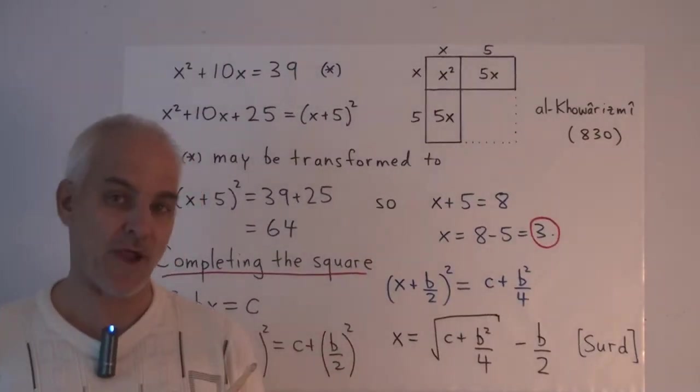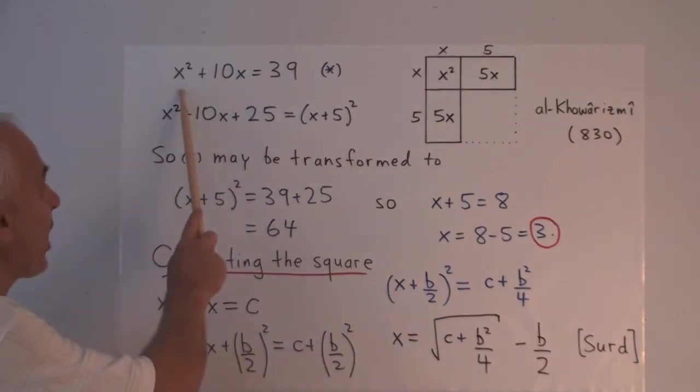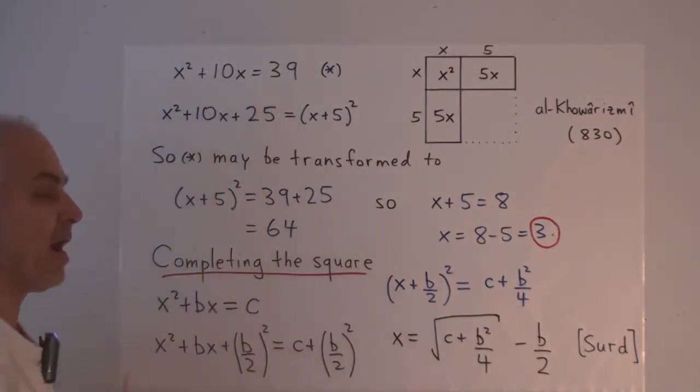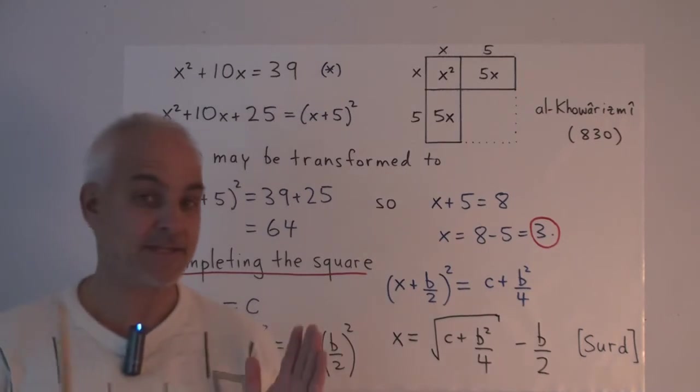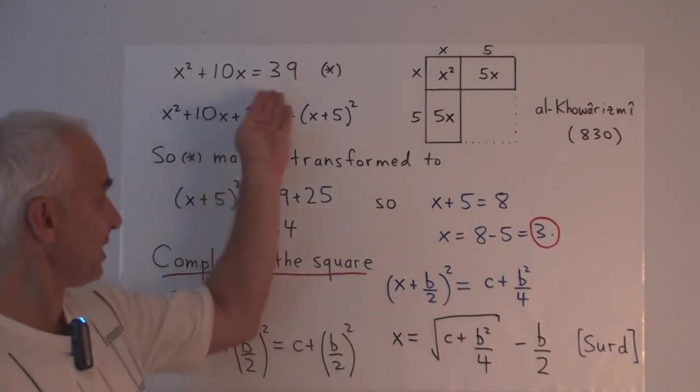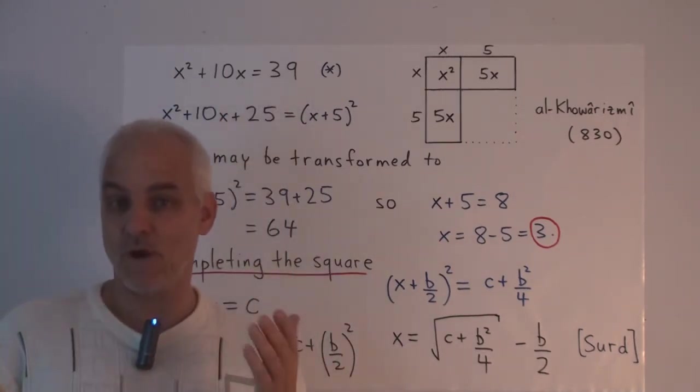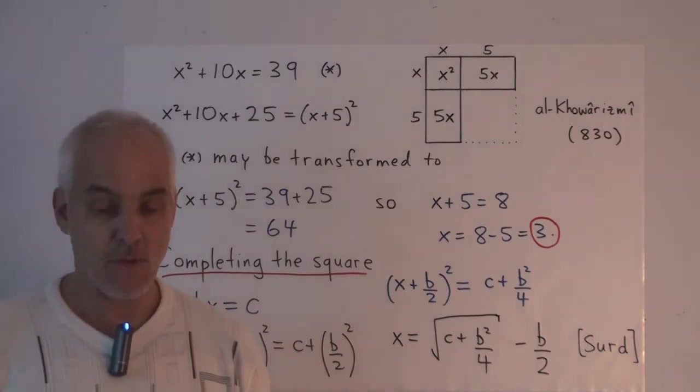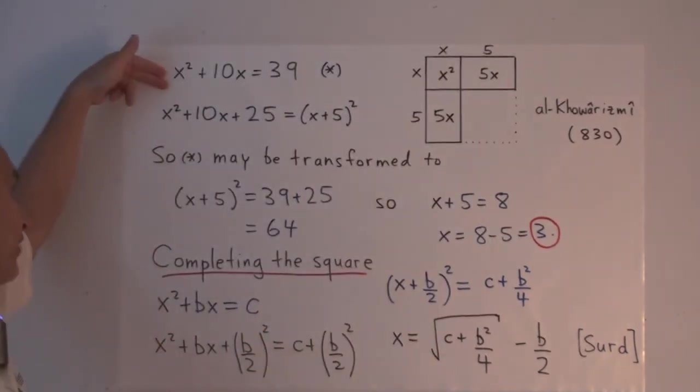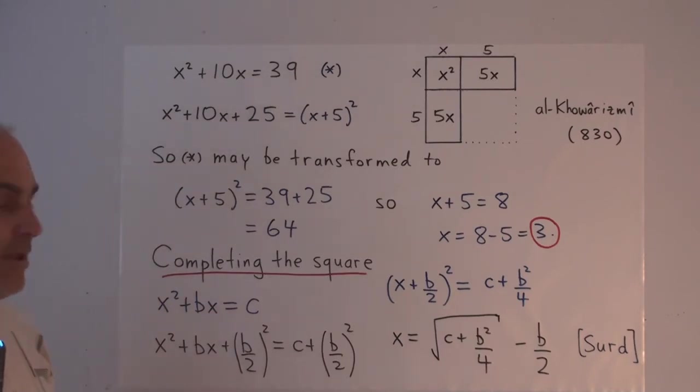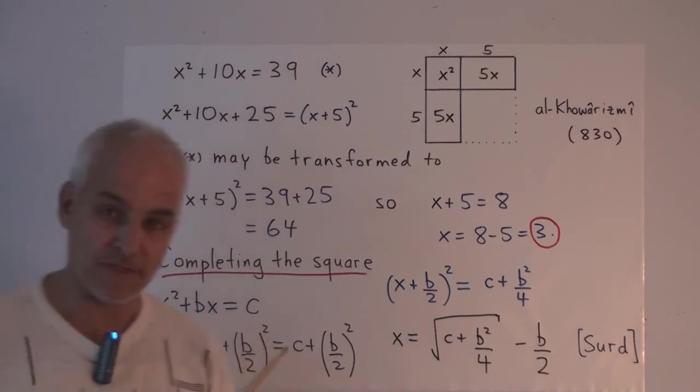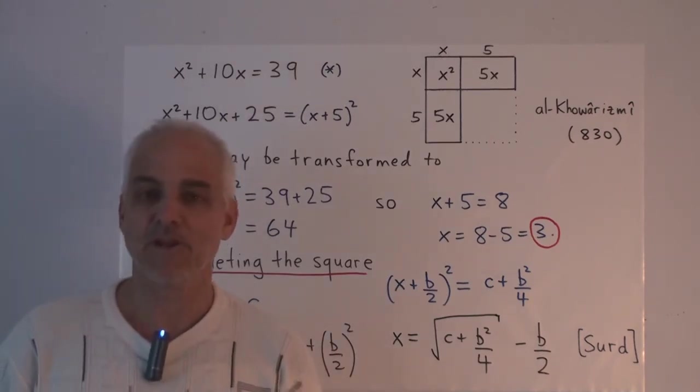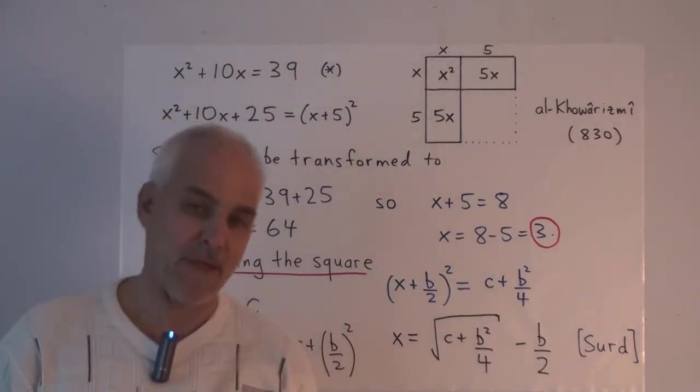So here's a more general quadratic equation. x squared plus 10x equals 39. x is some mystery number that satisfies this equation. And I want you to tell me what x is. Well, you can try trial and error. Try x equals 1. Try x equals 2 and so on until eventually you'll get it. In this case, it's not too hard.